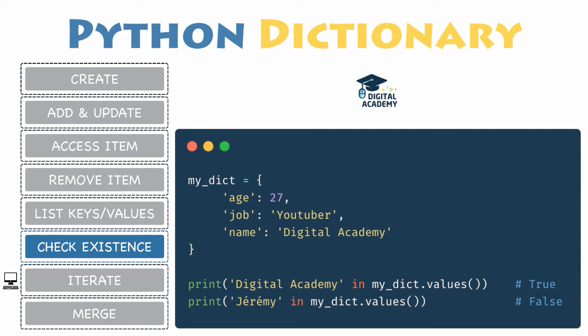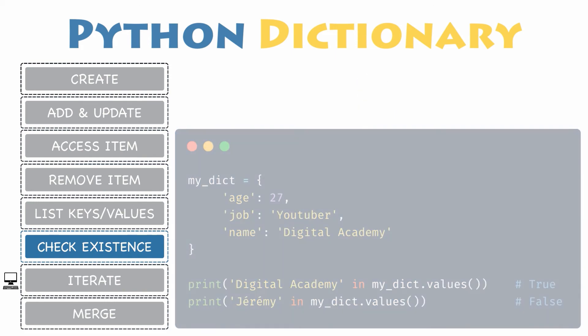To check whether a key or a value is part of my dictionary, just use the in operator combined with the associated function — keys or values.